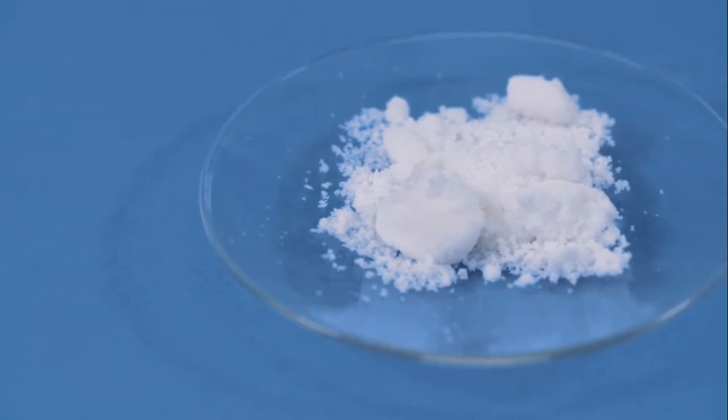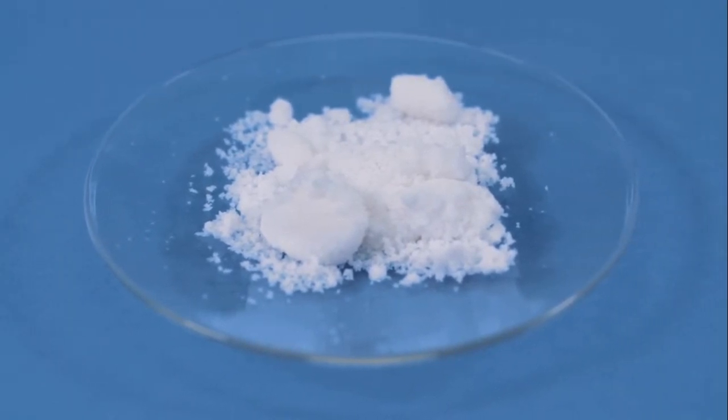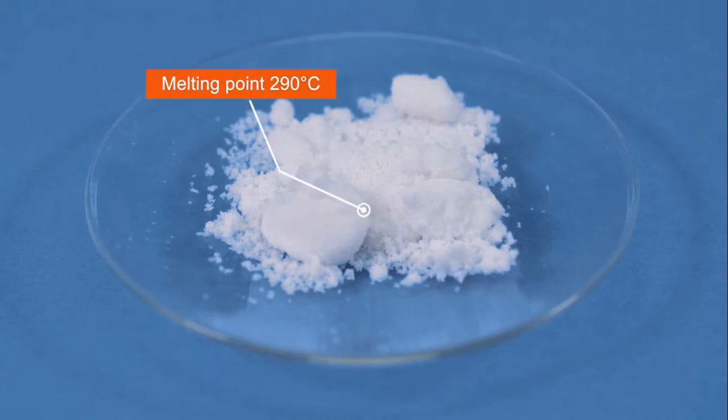In this experiment you are going to obtain zinc metal by the electrolysis of molten zinc chloride. Zinc chloride has a lower melting point, 290 degrees Celsius, which means it is more feasible to be carried out in a school laboratory.